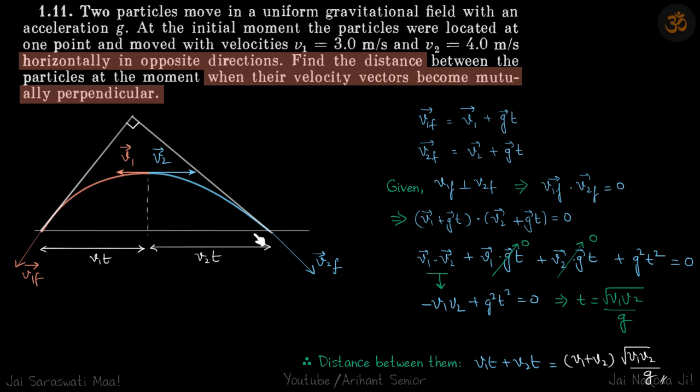We need to find the distance. Horizontal velocity is constant throughout in a projectile, so this distance is v1 t and this distance is v2 t. We need to find v1 t plus v2 t, or v1 plus v2 times t, which is our answer.